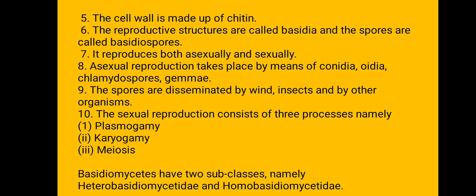In Basidiomycetes, asexual reproduction involves spores known as conidia, oidia, chlamydospores, and gemmae. Spores are disseminated by wind, insects, and other organisms. Sexual reproduction consists of three types of processes: plasmogamy, karyogamy, and meiosis. In plasmogamy, base cells fuse. In karyogamy, haploid nuclei fuse to form a diploid nucleus. In meiosis, the diploid cell forms four haploid cells. Basidiomycetes have two subclasses: Heterobasidiomycetes and Homobasidiomycetes.